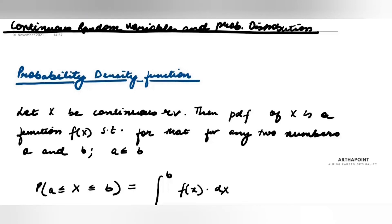There are various examples of continuous random variables. The easiest example is the speed of your car. The speed of your car can be 60, it can be 65, but it can also be anything between 60 and 65 — it can be 60.10, 60.11 — so it can actually take random values in between, and therefore it is called a continuous random variable.